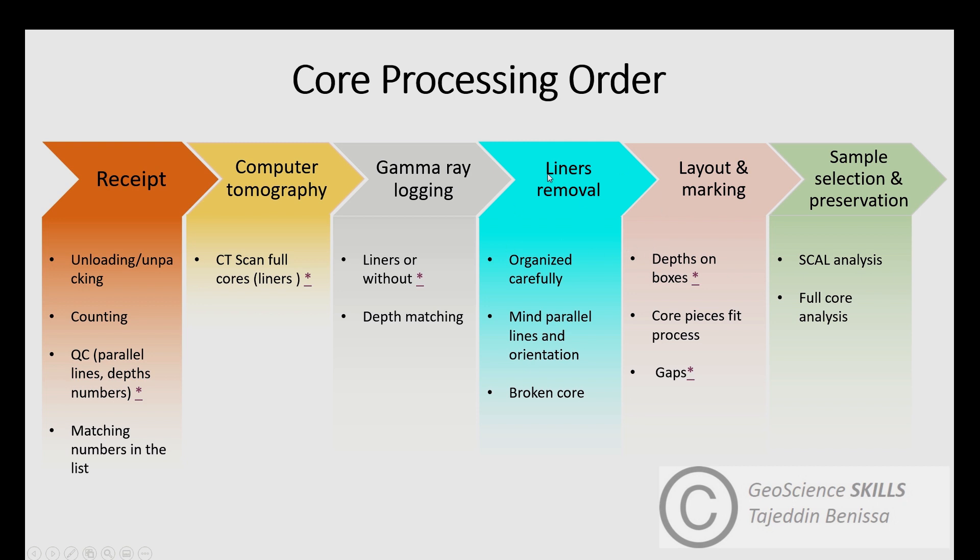Next is liners or tubes removal. In this stage, liners are removed to prepare core samples for the rest of the process, which is plugging, slabbing, and core photography. During removal of core samples from liners, technicians should mind the availability of parallel lines—the black and red lines—as both indicate the core orientation, top and bottom, on core samples right after extracting from tubes.